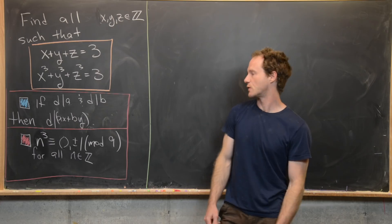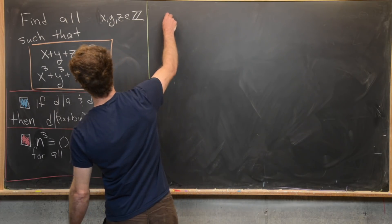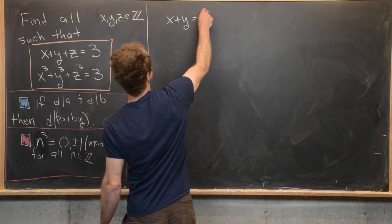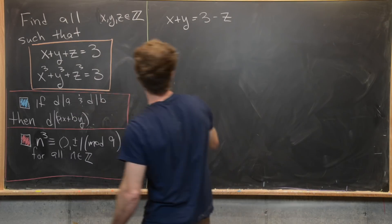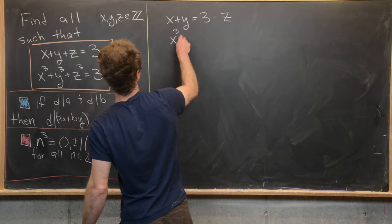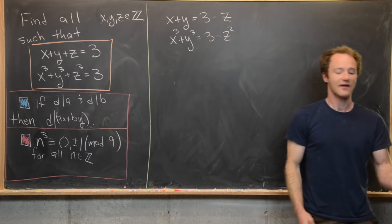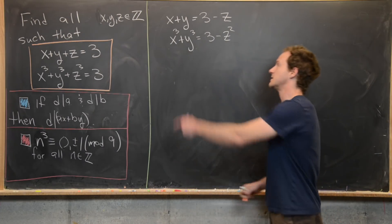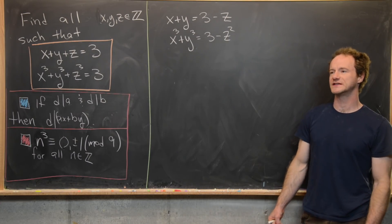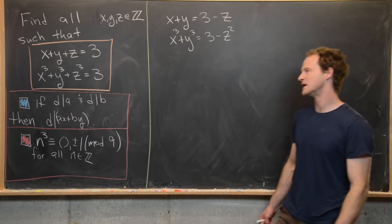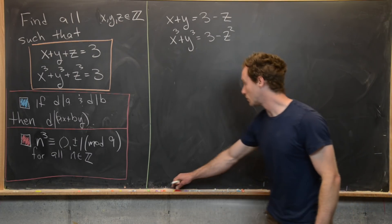Now we're ready to dive into our solution. From the first equation we can write x plus y equals three minus z. Similarly, x cubed plus y cubed equals three minus z cubed. We can factor x cubed plus y cubed — there's a standard factorization for a sum of two cubes that isn't quite present for a sum of three cubes, so we'll use that.